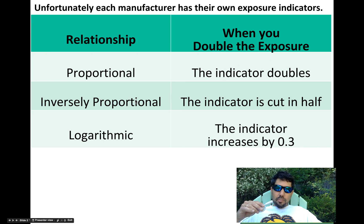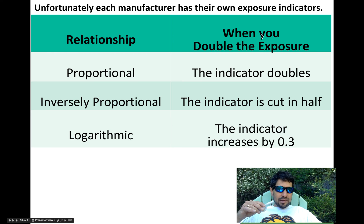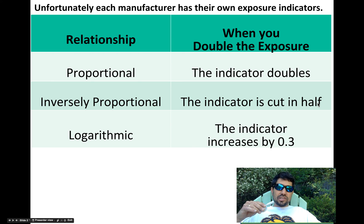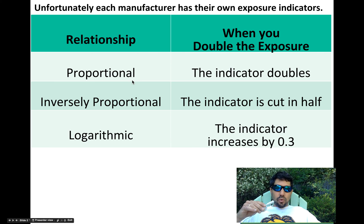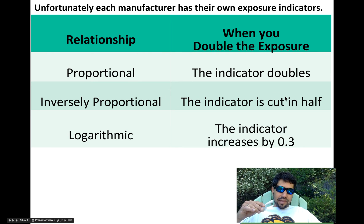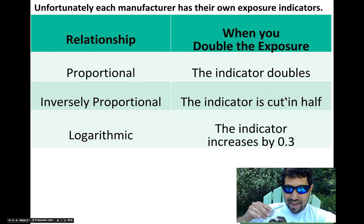The inversely proportional relationship ones are kind of the opposite. This means when I double the exposure, the indicator will drop in half. So when the exposure goes up, the number goes down. In the proportional one, when the exposure goes up, the indicator goes up. Here, when the exposure goes up, the indicator is going to go down.